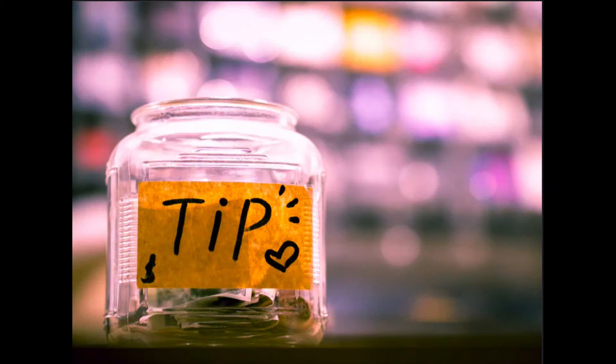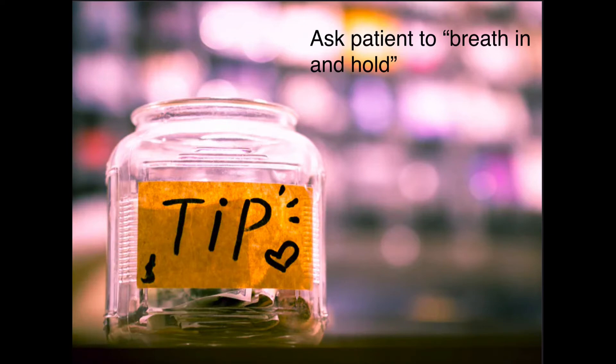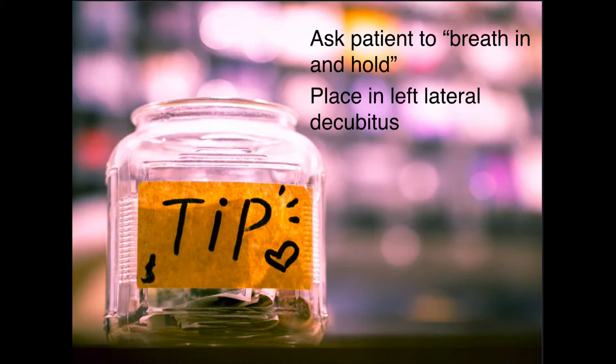With all the anatomic variation, here are some tips to keep in mind if you're having trouble locating the gallbladder. Number one, you can ask the patient to take a deep breath in and hold it. This increases the size of the thoracic cavity and pushes down on the liver and gallbladder, making it easier to get in view under the costal margin. Additionally, we can place the patient in the left lateral decubitus position, which may position the gallbladder closer to the surface or in an area where we can see it better. And if all else fails, there are a couple other approaches that can be helpful.